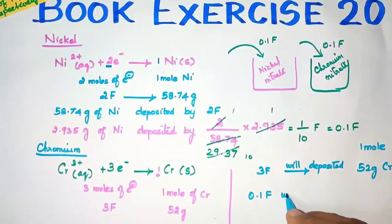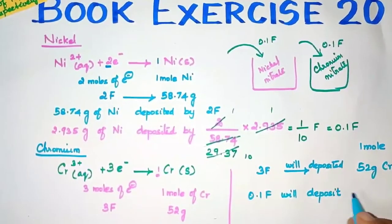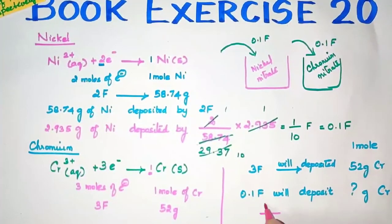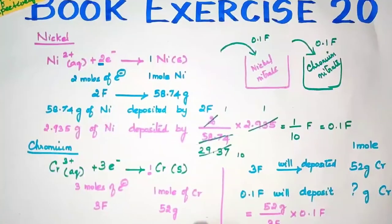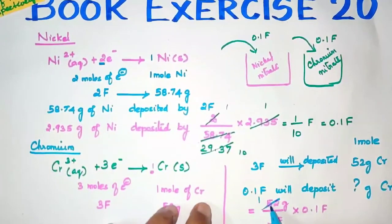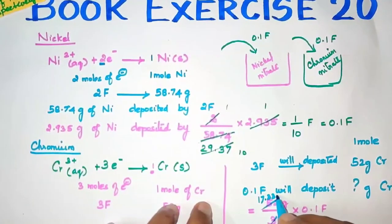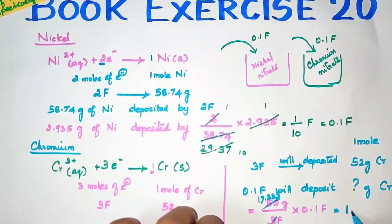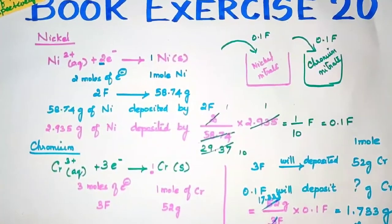We are sending 0.1 Faraday instead of 3 Faradays. So: if 3 Faradays deposits 52 grams of chromium, then 0.1 Faraday will deposit (52 × 0.1) / 3 = 5.2 / 3 = 1.733 grams. So 1.733 grams of chromium gets deposited by 0.1 Faraday of electric charge. This is the answer.